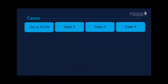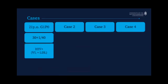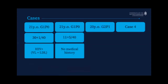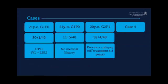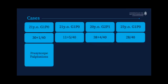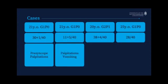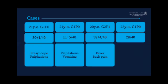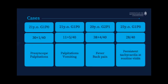I've got four cases to go through — all cases we saw on our service. Case one is a 21-year-old primigravida at 30 weeks, HIV positive but virally suppressed. Case two is a 21-year-old primigravida at 11 weeks with no medical history. Case three is a 20-year-old gravida at 28 weeks with previous epilepsy, off treatment for three years and doing well. Case four is another primigravida at 28 weeks with no medical history. All four received the same referral: please see this patient for a persistent tachycardia. Their presentations: presyncope and palpitations; palpitations and vomiting; fever and back pain; and persistent tachycardia noted at routine visits.